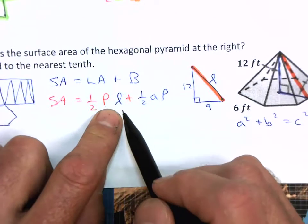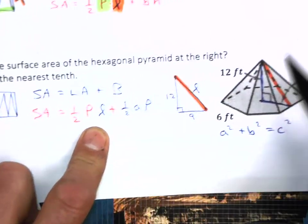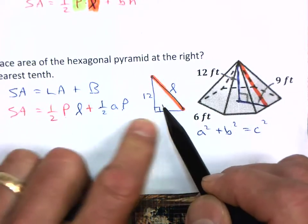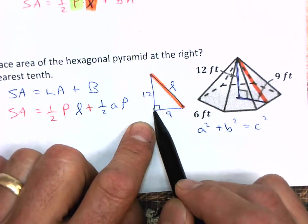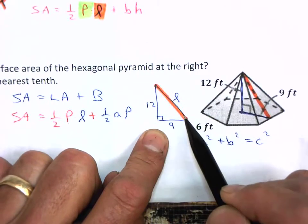Now, what I did forget was your slant height. They do not give us a slant height. So, let's take this triangle, this right triangle, out, put it over the side here, and let's label the dimensions. So this is 12, this is 9, that's your apothem. But we need to figure out what your slant height is.